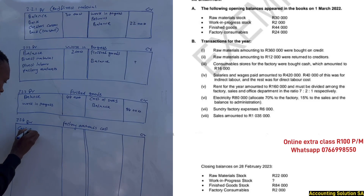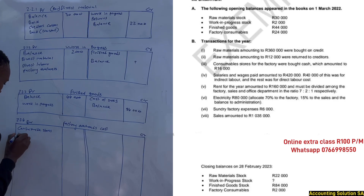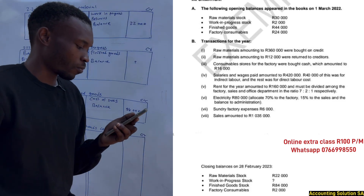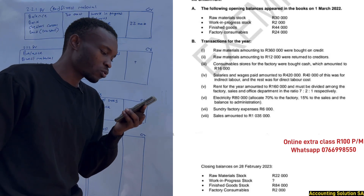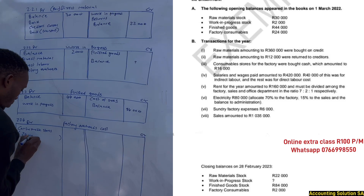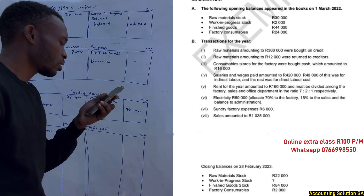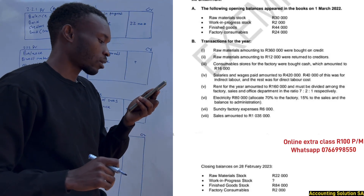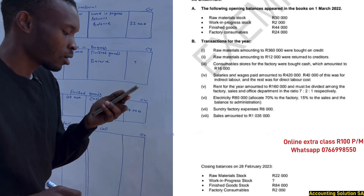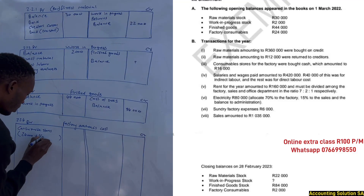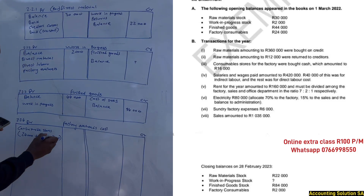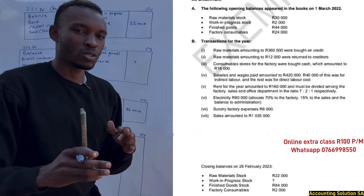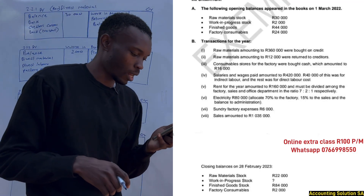Consumable stores fall under factory overheads. For the consumable stores account: opening balance is 24,000 (factory consumable), plus purchases of consumable stores — we bought consumables for the factory for cash amounting to 16,000, minus the closing balance of 2,000. The formula is: opening plus purchases minus closing for consumable store or indirect material, giving us 38,000.